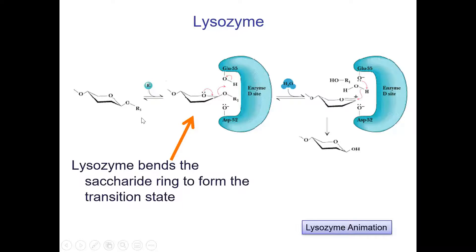An example is lysozyme, which breaks down peptidoglycan. It wants to cut a specific bond, but that bond is stabilized by a whole bunch of hydrogen bonds, making it very hard for a water molecule to get in and hydrolyze the reaction. What happens is the whole molecule gets warped a little bit — that warping effect loosens the hydrogen bonds and allows the water molecule to get in much more easily.